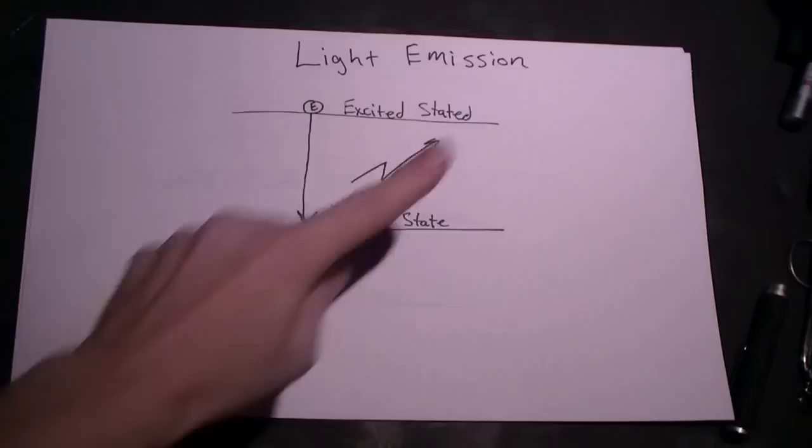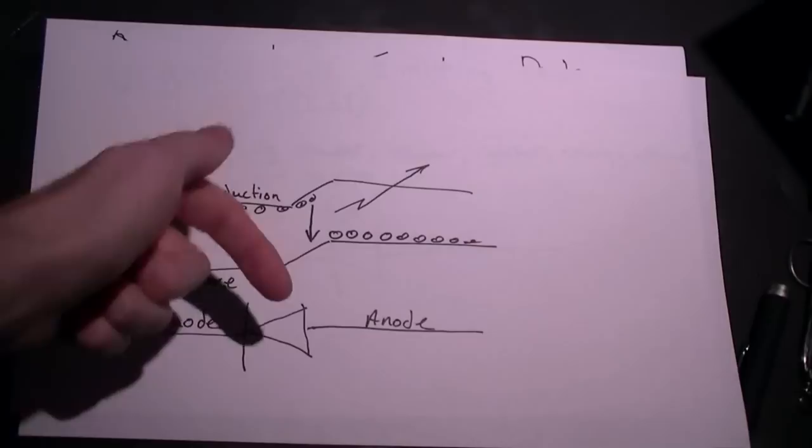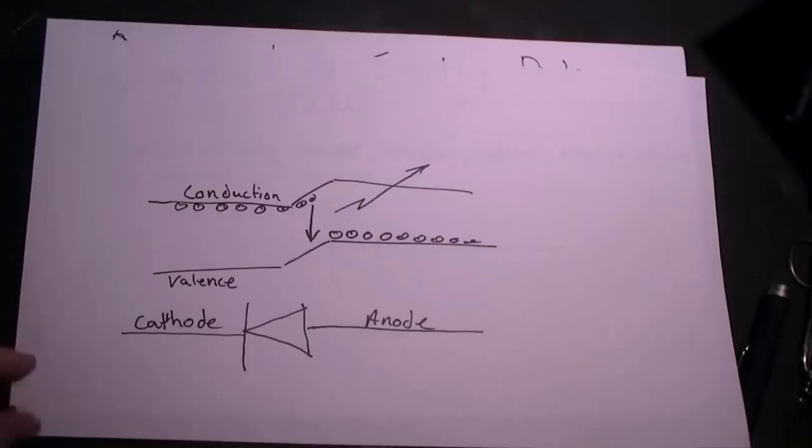This is called the band gap and is engineered into the device by the particular semiconductors and the doping used. Electrons enter from the cathode side in the conduction band, a higher energy state, move towards the holes in the anode, and drop across the band gap and emit a photon.